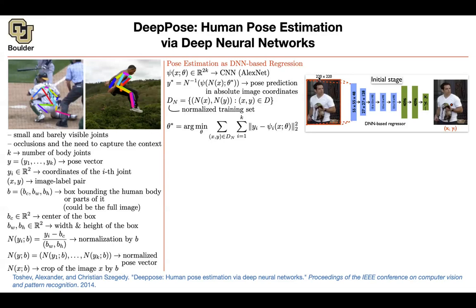Visually, the algorithm is clearer: an image of size 220×220 goes into AlexNet — with convolutional and fully connected layers — and you output the location of every joint. You subtract the ground truth, square it, and get a loss. However, this only gives coarse estimates. Using a network like AlexNet addresses occlusions by capturing the global context, which is important for predicting, say, the location of an occluded left shoulder.